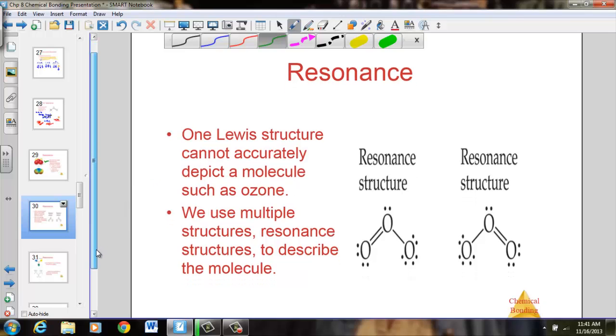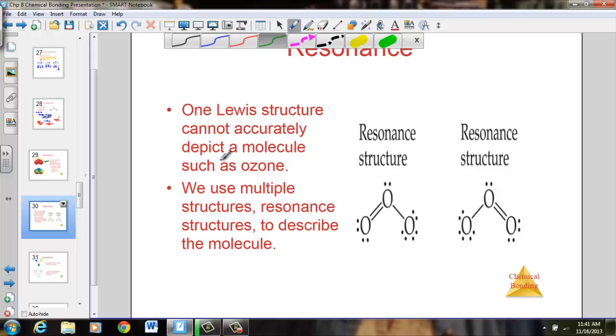Let's discuss that term, resonance. If one Lewis structure cannot accurately depict a molecule such as ozone, it's said to exhibit resonance. We use multiple structures, known as resonance structures, to describe the molecule. If we consider the ozone molecule, we have the central atom, going off in one direction with a double bond to single, or perhaps going to the single to double. I'm not just taking this and flipping it in space, but actually attaching the double bond to a completely different atom. We've exhibited resonance. You're going to see a double arrow pointing to both structures, and that denotes that they are both equally valid structures.